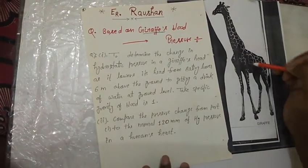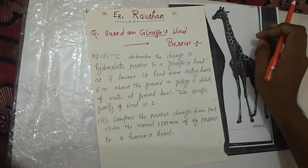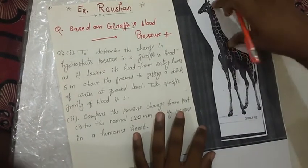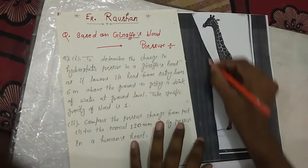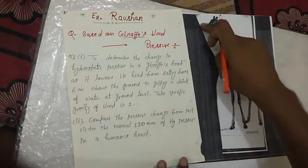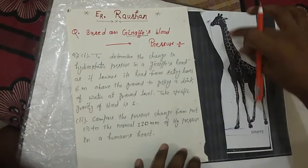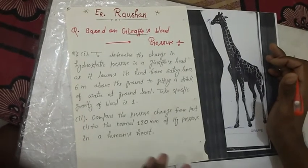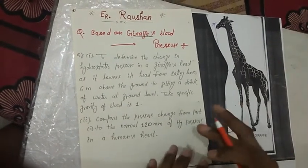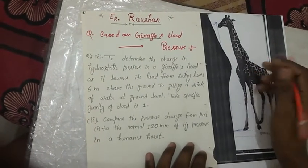Look here at a giraffe. What is the concept in a giraffe to maintain their blood pressure or circulatory system? This is the ground level and the giraffe has a long neck. From ground level to where it grazes leaves on trees, it is almost 6 meters. When a giraffe lowers its head, a large amount of hydrostatic pressure increases in their circulatory system, and blood vessels could rupture.